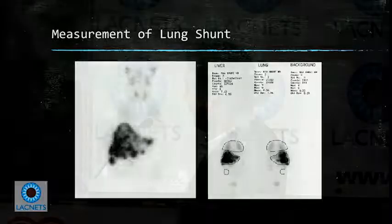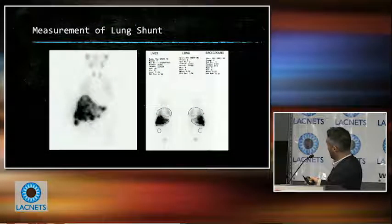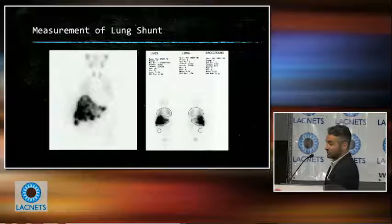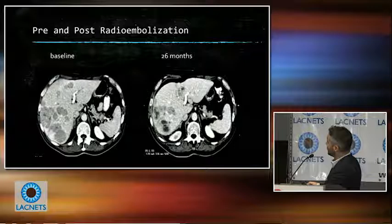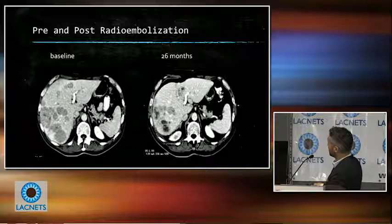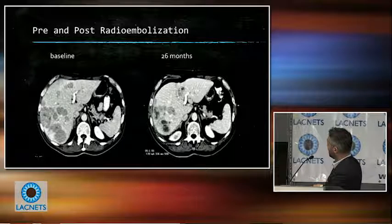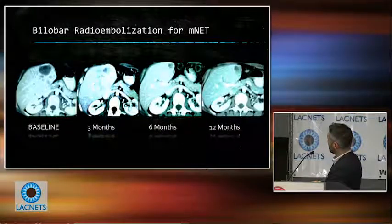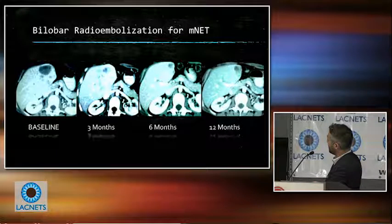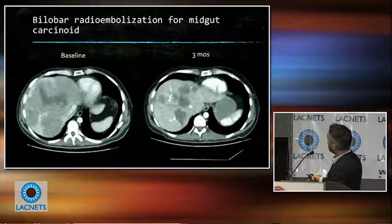After the mapping procedure, we measure the shunt of radiation to the lungs using a nuclear medicine study. The black areas represent radiation in the liver, and the circle surrounding the lungs measures the radiation reaching them. We calculate the percent going to the lungs versus the liver — if too much goes to the lungs, we would avoid treating. In the Kennedy study, a complete response was seen in almost 3%, partial response in 61%, and disease stabilization in 23%. Major adverse events were quite low, with the most common significant adverse event being fatigue.